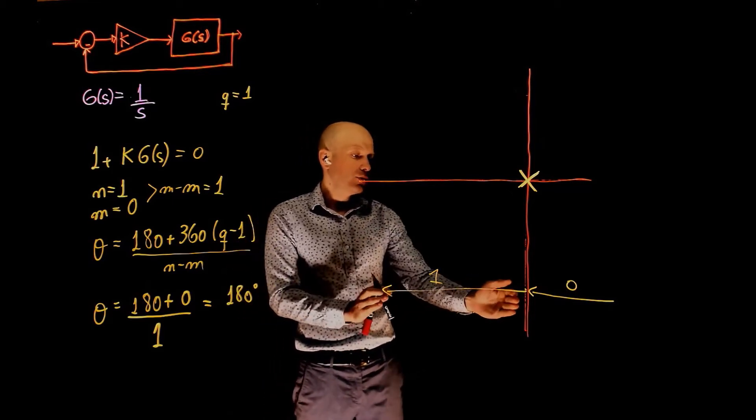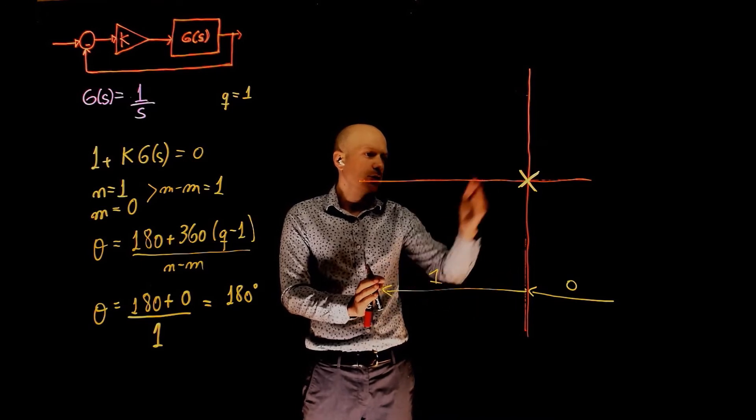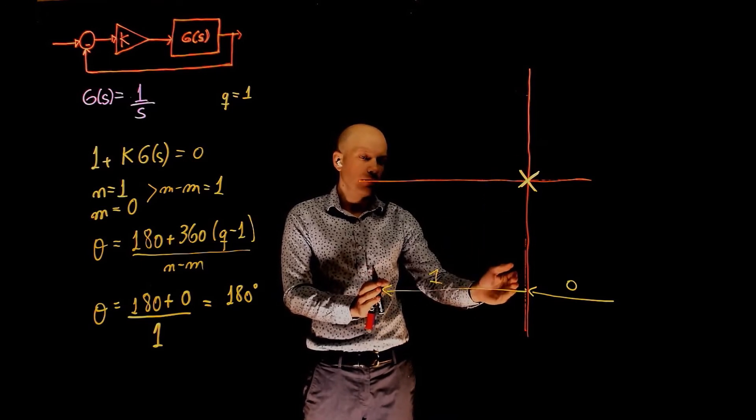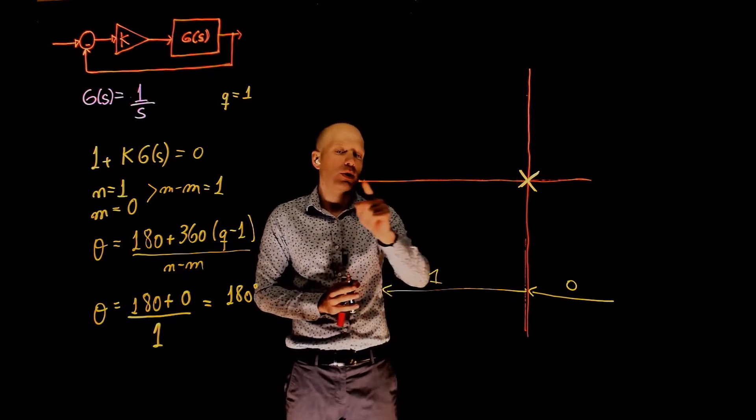In this region here, we now have an odd number of poles and zeros, and you are to the left of an odd number of poles and zeros. So we know now that the root locus needs to exist along this real part of the axis.